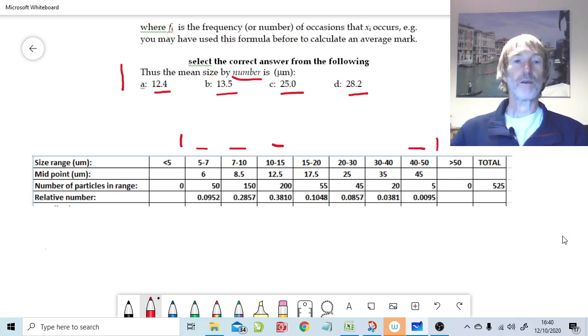You can see the values of the particles in that range. There's 50 particles here in this range between 5 and 7, 150 particles between 7 and 10, 200 particles between 10 and 50. The total number of particles is 525. So we're calculating a mean.